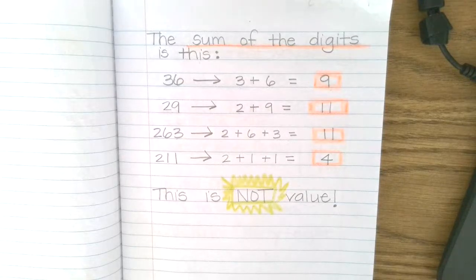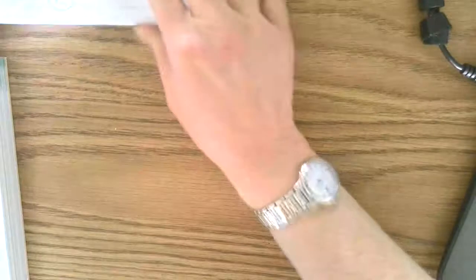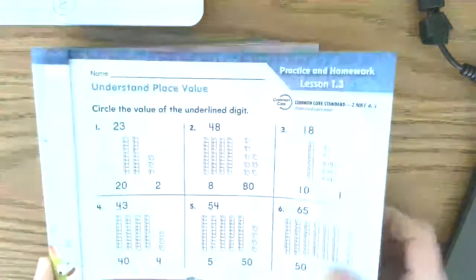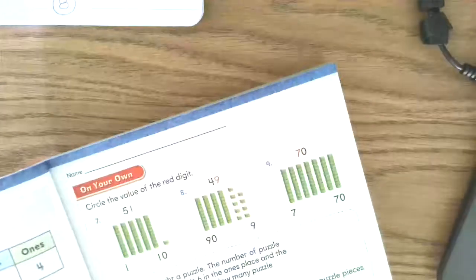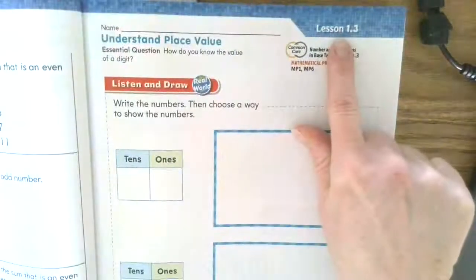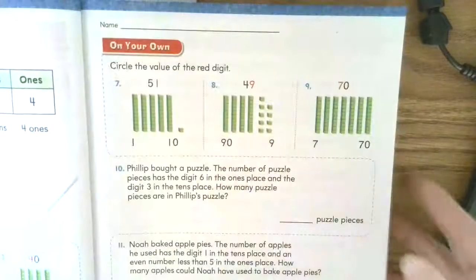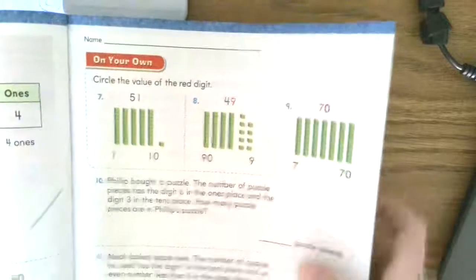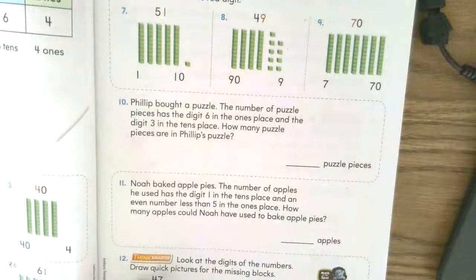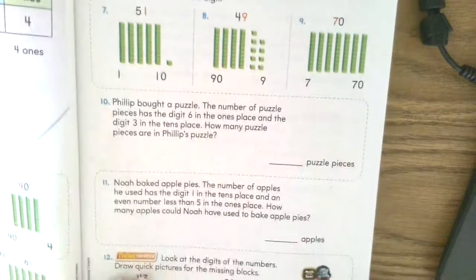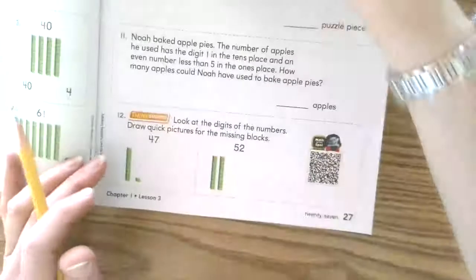Now that you're done with page eight in your math journal, in your math book, you're going to do this lesson 1.3 in the book. You don't need to do 25. I think you did that online. This is just a quick review of value. That should not take you long, but a couple of things to talk to you about on page 27, the math on the spot.